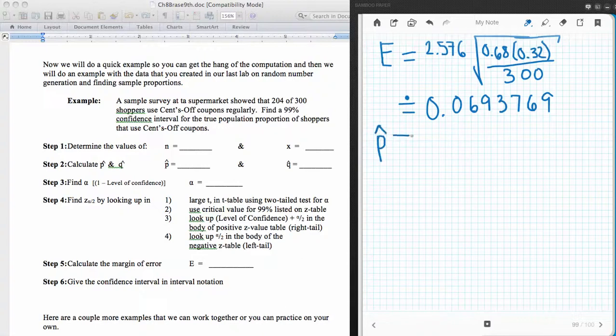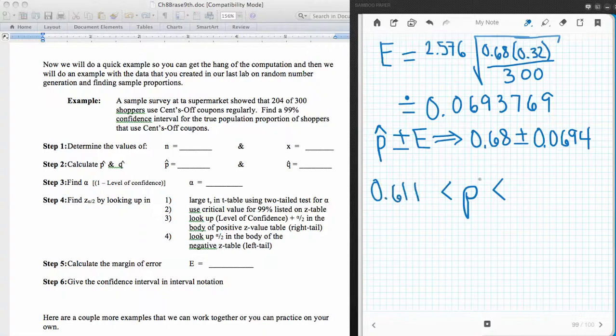Now, in order to make my interval, my p-hat plus or minus my e makes my interval. So in other words, I'm going to take my sample proportion, 0.68, and I'm going to add-subtract 0.0694. And so I have an interval at which I'm going to put p, is in between this, the population proportion, is between 0.68 minus this and 0.68 plus this. So 0.68 minus 0.0694, and that gives me 0.6106, which I'm going to round off to 0.611, and then 0.68 plus 0.0694, and that, of course, is going to give me 0.7494, which I will round off to 0.749, and that will be my interval.